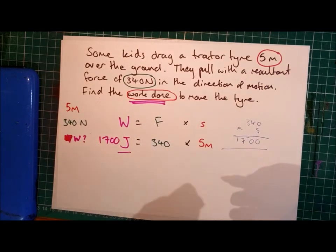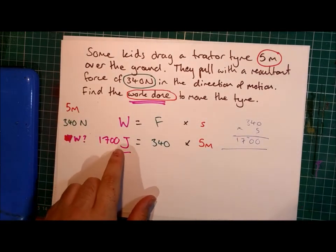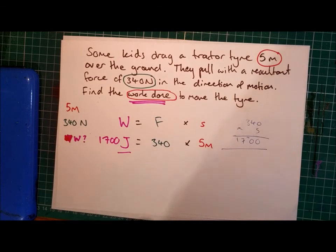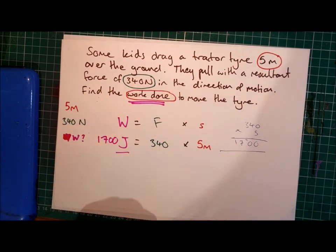So our final answer is 1,700 joules. And as ever, you've got to remember to put that unit in. So the work done to move the tyre was 1,700 joules. I hope this helped. If you have any questions, do either leave a comment underneath or speak to me in school. And as ever, next lesson there'll be a few questions based on this idea of work done for you to work on. Bye.